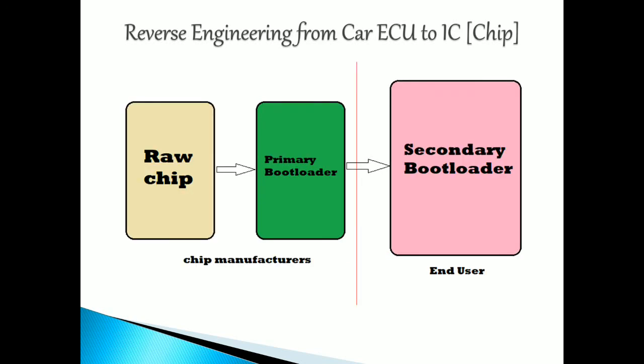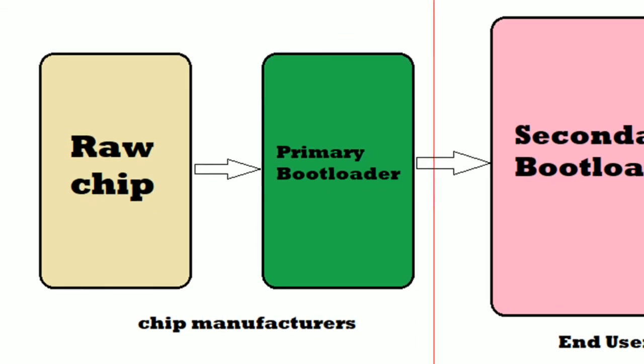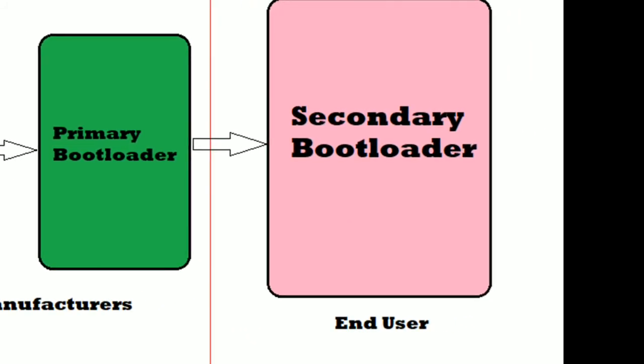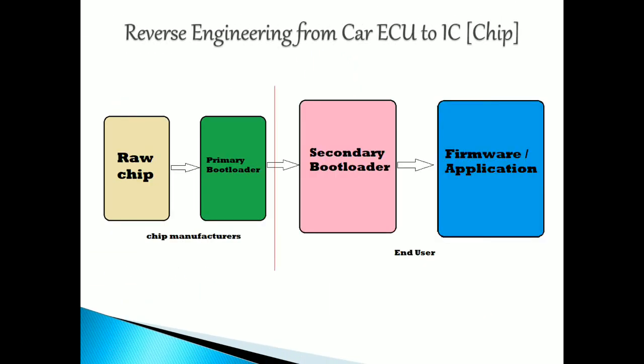When the manufacturer gives the chip to the vendor, it must be flashed with the primary bootloader. So the raw chip with the primary bootloader flashed falls under the chip manufacturer's category. The secondary bootloader step belongs to the end user — once you buy the chip or the ECU and take out the chip, you flash the secondary bootloader.